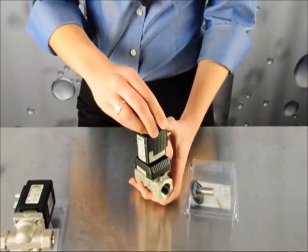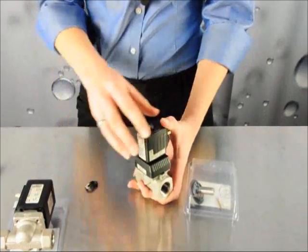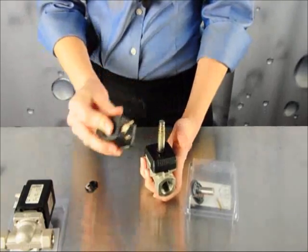Remove the nut, the washer, and the seal, and slide the coil off of the body.